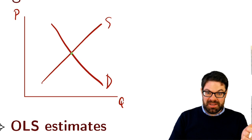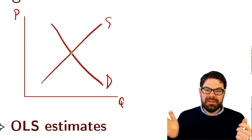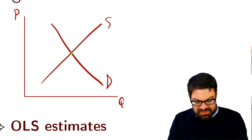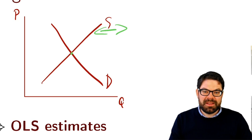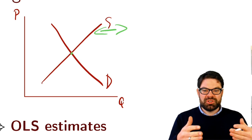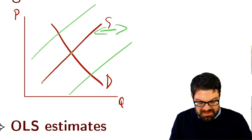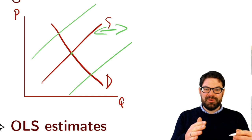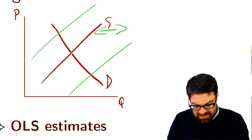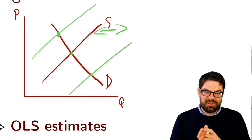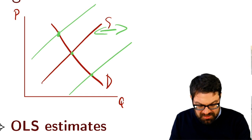So how do you do that? We would need something that shifts, for example, the supply curve left and right without affecting demand. If you have a variable that shifts supply, that would allow you to trace out the demand curve. Because if you have a supply curve here and a supply curve there, from those three supply curves you can trace out the demand curve — you observe those three points and can estimate the slope of the demand curve. Likewise, you could think about a demand shifter, which allows you to trace out the supply curve.